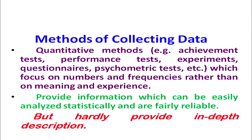What methods are available to collect data regarding students' characteristics, behavioral characteristics, and achievement? There are quantitative methods like achievement tests, performance tests, experiments, questionnaires, and psychometric tests. These are quantitative methods through which quantitative data regarding students' characteristics can be collected. These types of data focus on numbers and frequencies rather than on meaning or experience, and they provide information that can be easily analyzed statistically and are fairly reliable.